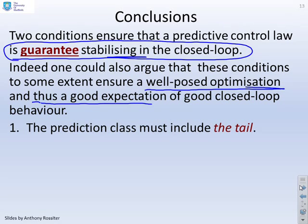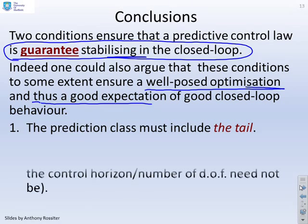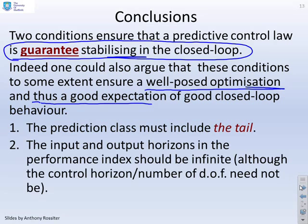So the conditions you require: the prediction class must include the tail, and the input and output horizons in the performance index should be infinite. Although the control horizon and the number of degrees of freedom need not be infinite, you can have a finite number of degrees of freedom and that does not affect these proofs.